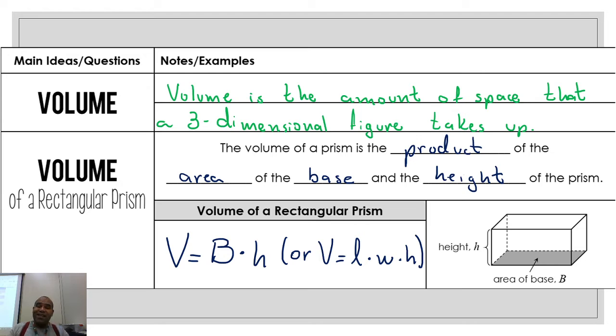Great. And the volume of a prism, guys, it's easy. The volume of a prism is the product of the area of the base and the height. Okay, we have the base area here and the height. We multiply these numbers and we got our volume.